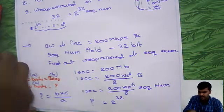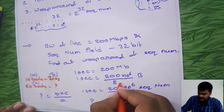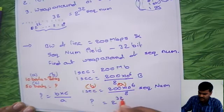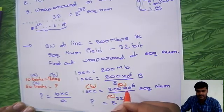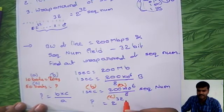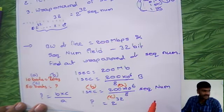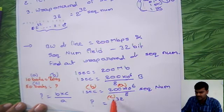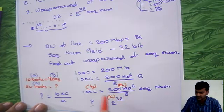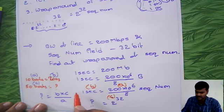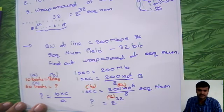So here, in this case, this is A, this is B, and this is C. Simply see, try to understand not the formula, try to understand the concept here. To generate this many sequence numbers it is taking one second, to generate 2 rise to 32 sequence numbers how much time it will take? Simple. So B into C by A, we will get that much time it will take to generate this sequence number.